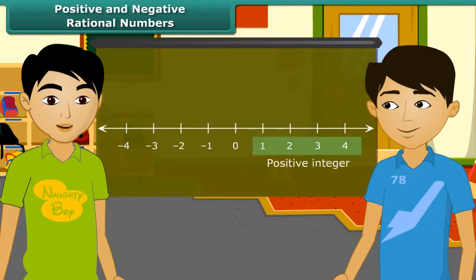Points on right side of 0 are called positive integers and points on the left side of 0 are called negative integers.